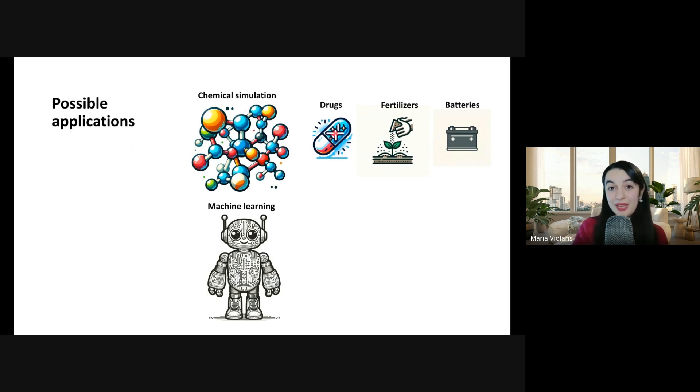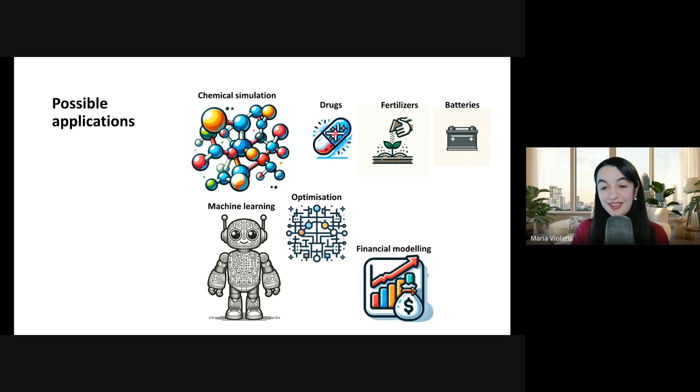There's also possible applications to speeding up aspects of machine learning, the field of quantum machine learning. There's possible speed-ups in optimization problems, which have a range of applications in many different fields. And there's also people looking into speed-ups in financial modeling from quantum computers.